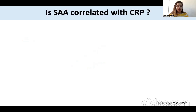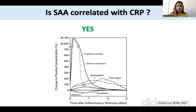The second question is: is SAA really correlated with CRP? And the answer is yes. In fact, as you may see here, the curve of CRP and the curve of SAA are correlated and have the same kinetics. So, in our clinical practice, in daily practice, we can just prescribe CRP instead of SAA.